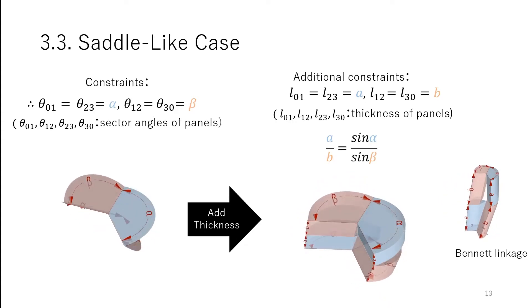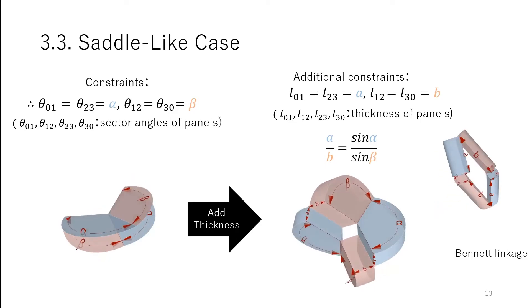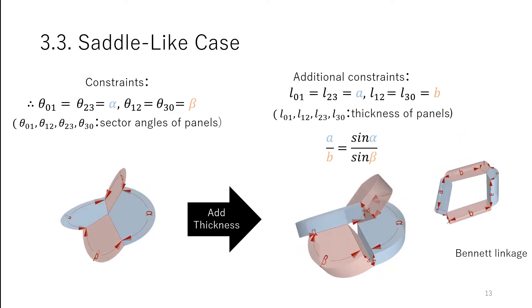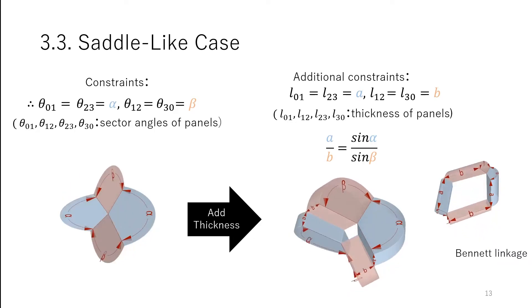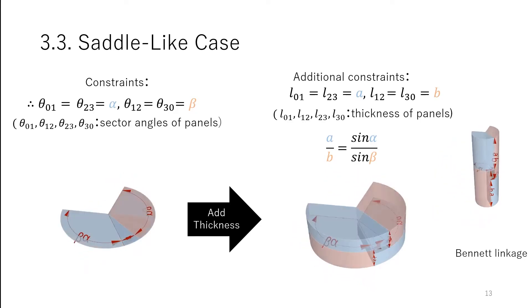Bennett linkage is the only known spatial four-bar linkage. And Chen applied Bennett linkage to developable degree-four vertices. We can similarly construct a Bennett linkage in our case by carefully choosing the thickness and angles.